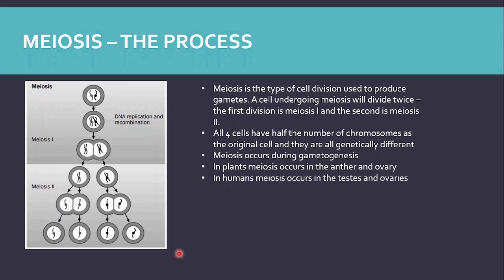Meiosis is the type of cell division used to produce gametes. A cell undergoing meiosis will divide twice: the first division is meiosis I and the second is meiosis II. The cell first undergoes DNA replication before meiosis I, where it splits into two cells. These two cells then go straight into dividing again without further DNA replication, resulting in four cells. These four cells have half the number of chromosomes as the parent cell and are also genetically different from each other and from the parent cell.